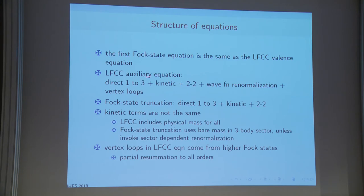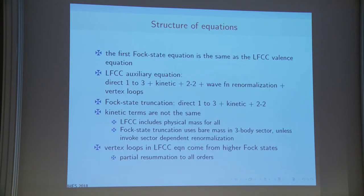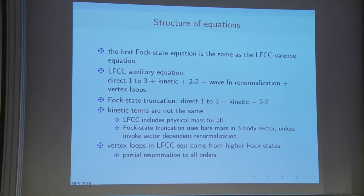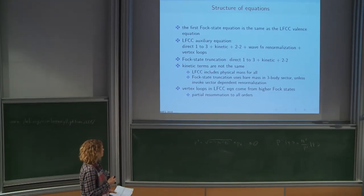Question about computational cost: would adding one more term — the five-particle term in LFCC — be feasible? Answer: Because of the non-linearity — the T₂-squared term — it becomes difficult. This is why we did not expand LFCC further. Instead, we did Fock state truncation up to nine particles. LFCC is expensive but doable. In fact, because LFCC does worse than truncation to five, seven, or nine states, this is exactly because we included only one T operator that adds two particles.